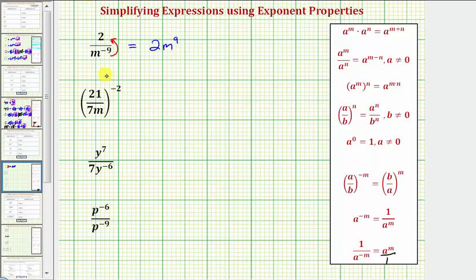Looking at our next expression, notice we can simplify inside the parentheses. There's a common factor of seven here, where 21 divided by seven is equal to three. So this is equal to three divided by m raised to the power of negative two.